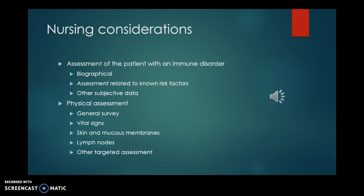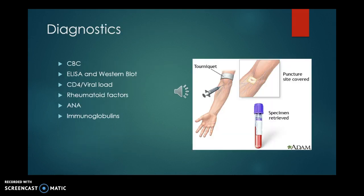Your nursing assessment as it relates to immunity includes the patient's biographical history, known risk factors, and other subjective data. Objective assessment includes vital signs, skin and mucous membranes — papery thin skin, for example, is a poor indicator for maintaining good immunity — and assessment of lymph nodes by palpation, along with other targeted assessments related to the organ or disorder involved. Diagnostics include a CBC, and we'll discuss the role of ELISA, Western blot, CD4 count, and viral load as they relate to HIV and autoimmune disorders.